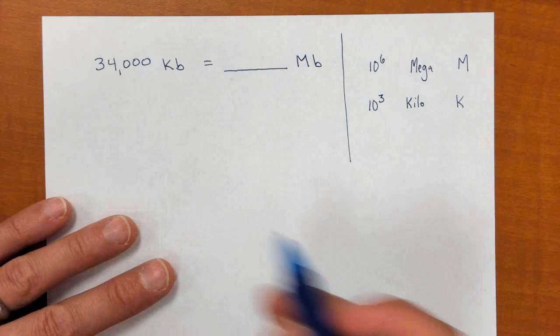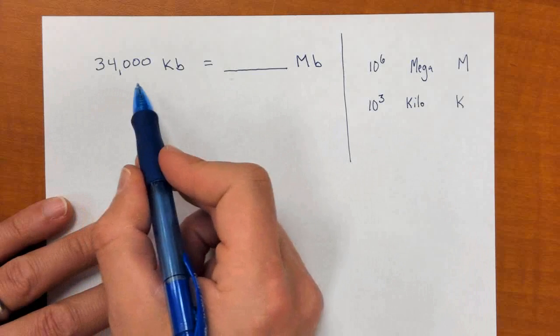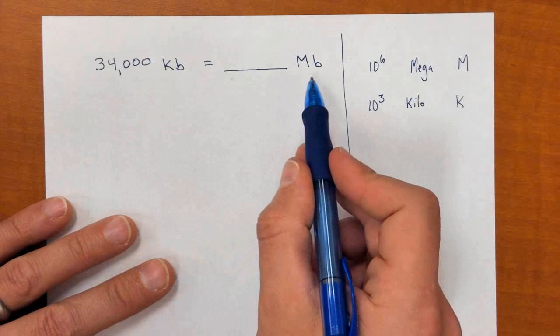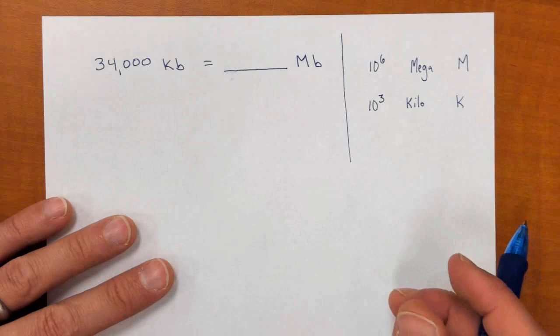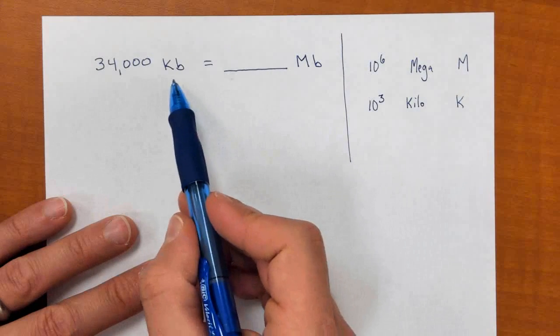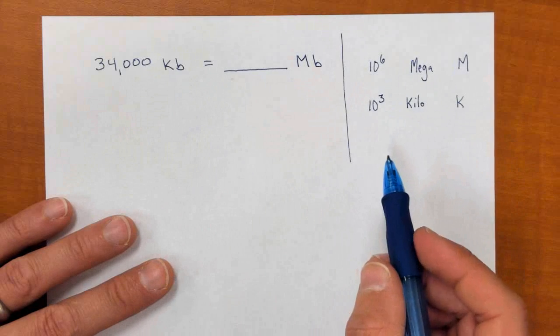Here's a unit conversion example. We're going to convert 34,000 kilobytes into megabytes. We all use computers and smartphones and things today, and we're using a lot of data, and byte is a unit of data.